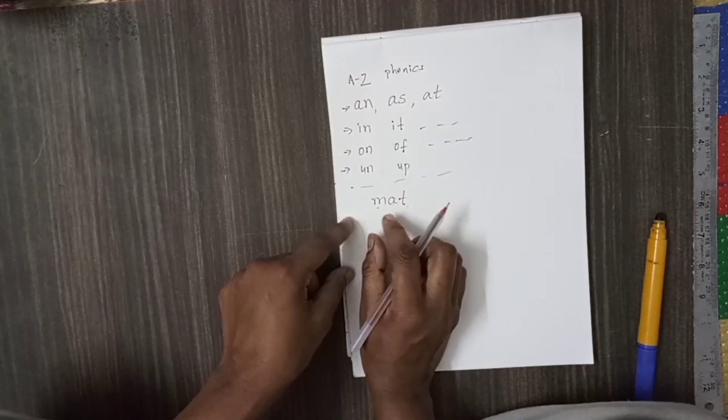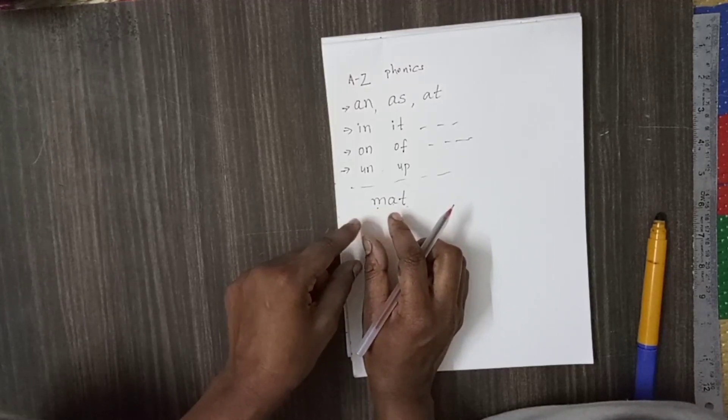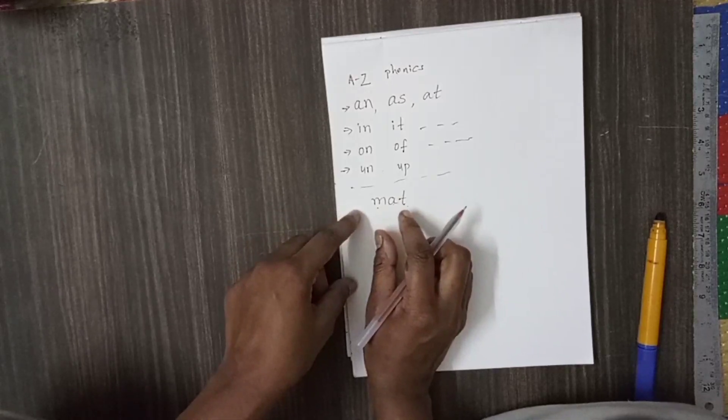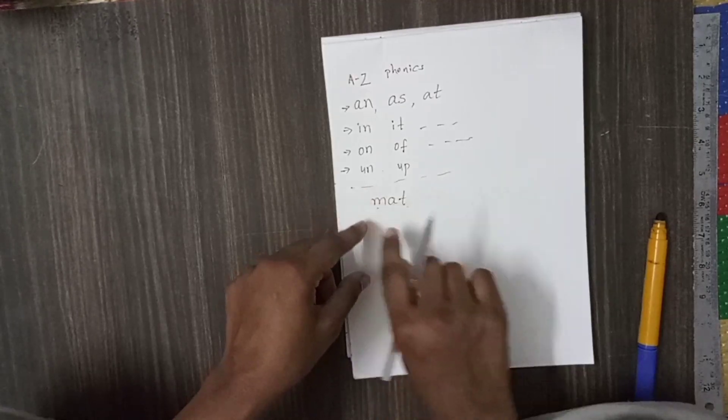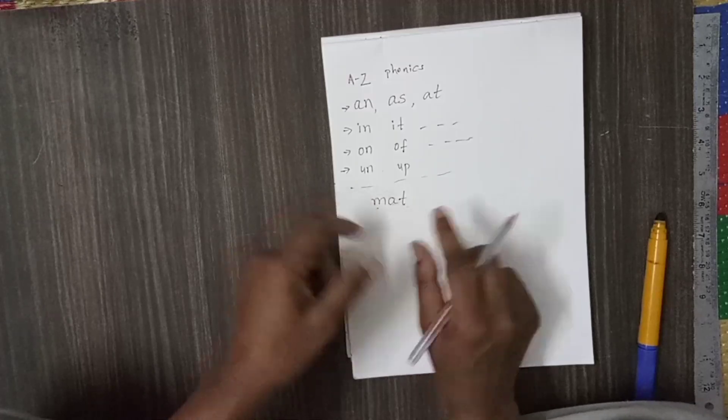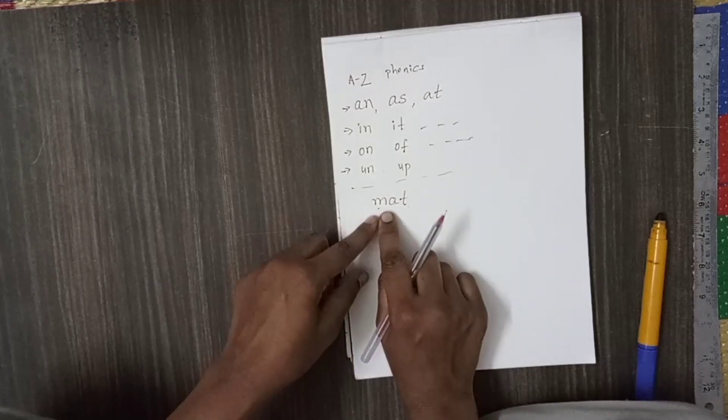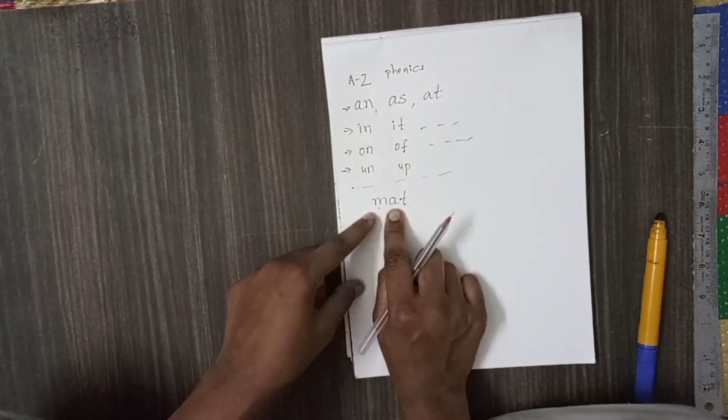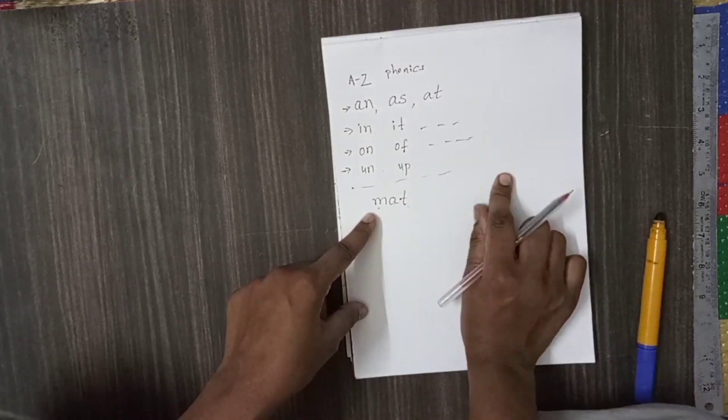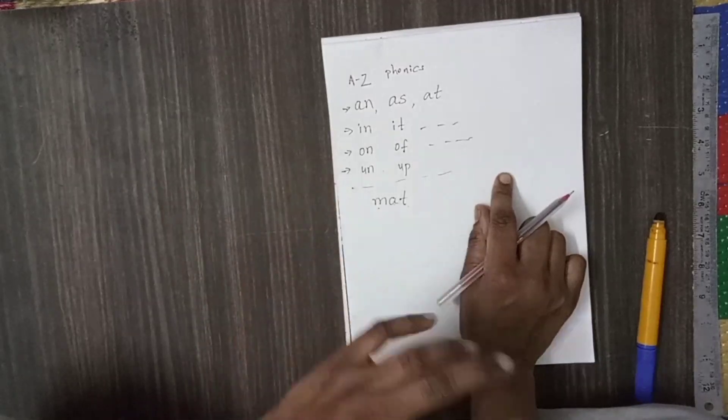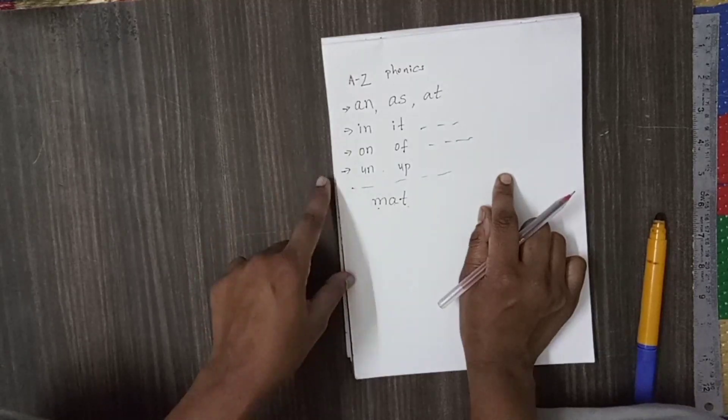We should not allow them to take long gap between the sounds. They should read it immediately after each sound. Like, M, A, T, MAT. If they take the time, long time, in between, then what will happen? They can't able to form the word. They can't be able to form the word.